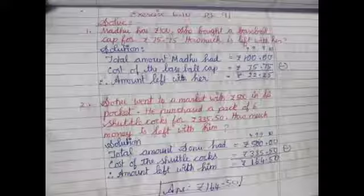0 minus 5 is not possible. Get the borrow from previous place values. Here we have a 0, so from the 1 we are taking. So it is 100 minus 75.75 equals 24.25 rupees.